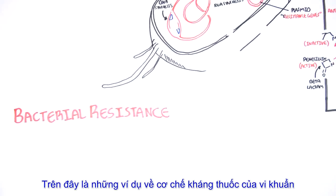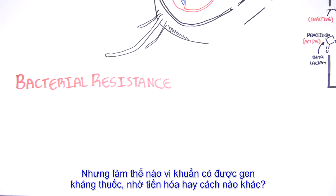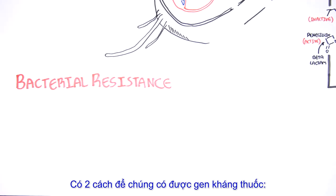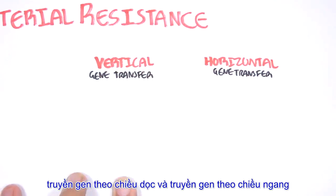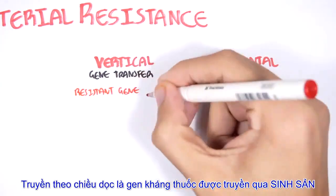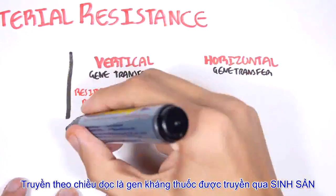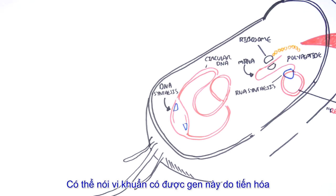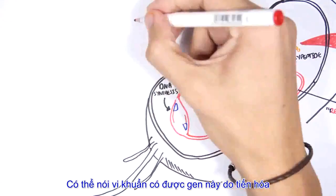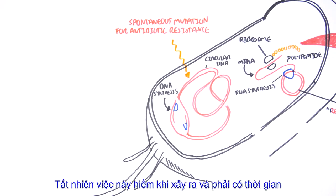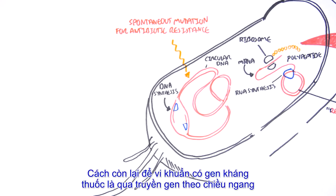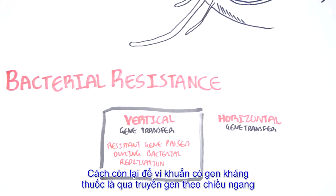Those are some examples of how bacteria are resistant to antibiotics. But how do bacteria acquire such resistant genes? There are two ways: one is through vertical gene transfer, and the other is through horizontal gene transfer. Vertical gene transfer is where the resistant gene is passed through bacterial replication — the bacteria acquires the gene throughout evolution, for example through spontaneous mutations. This is rare and does take some time.